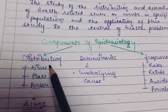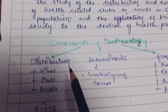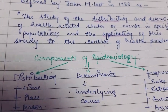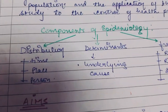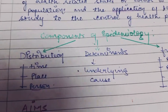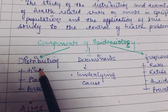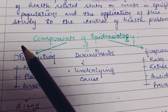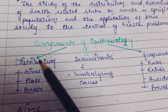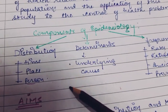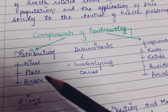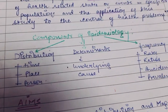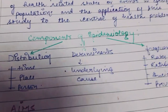Distribution means how a disease is distributed on the basis of time, place, and person. On the basis of time — for example, malaria and dengue are more common in certain seasons, while all respiratory diseases are more common in winters. On the basis of place — how a disease is distributed geographically. For example, HIV is more prevalent in South Africa and Nigeria, and in India it is maximum in South India, particularly Tamil Nadu.